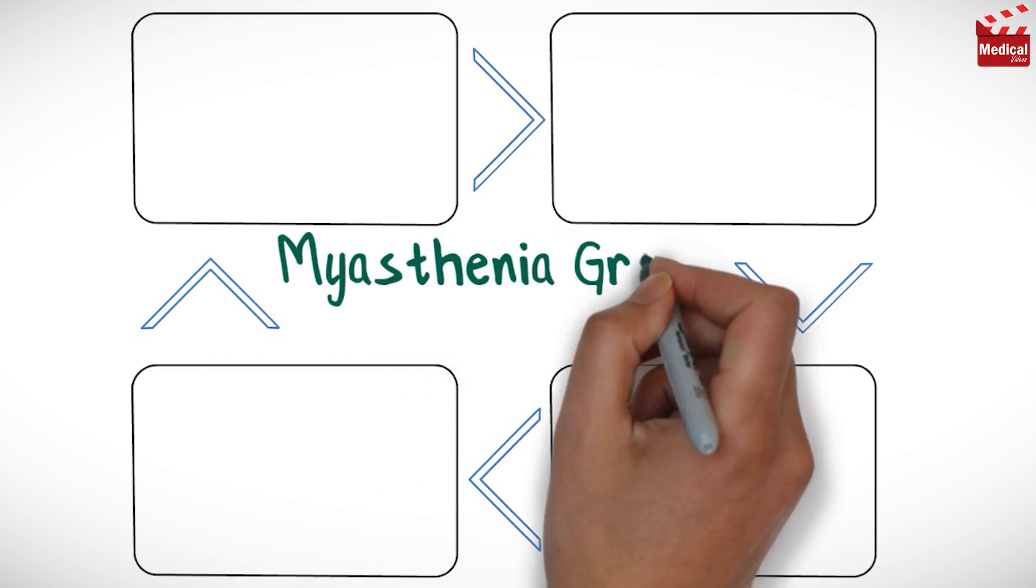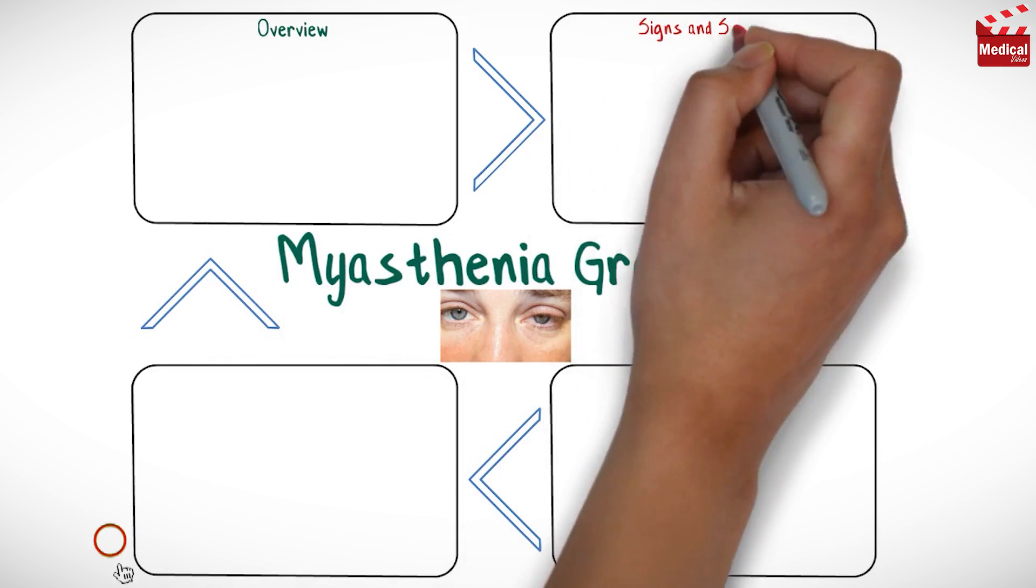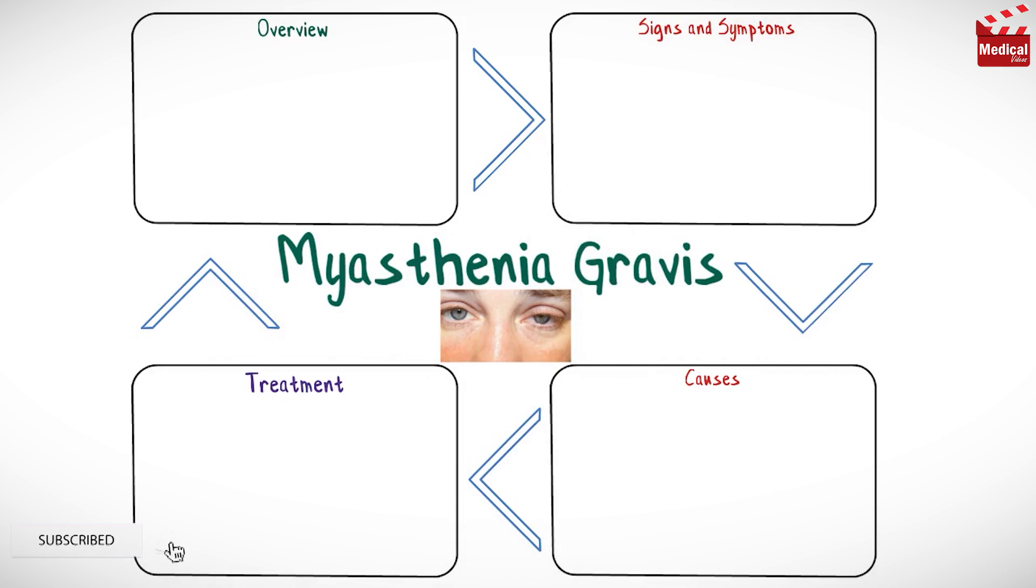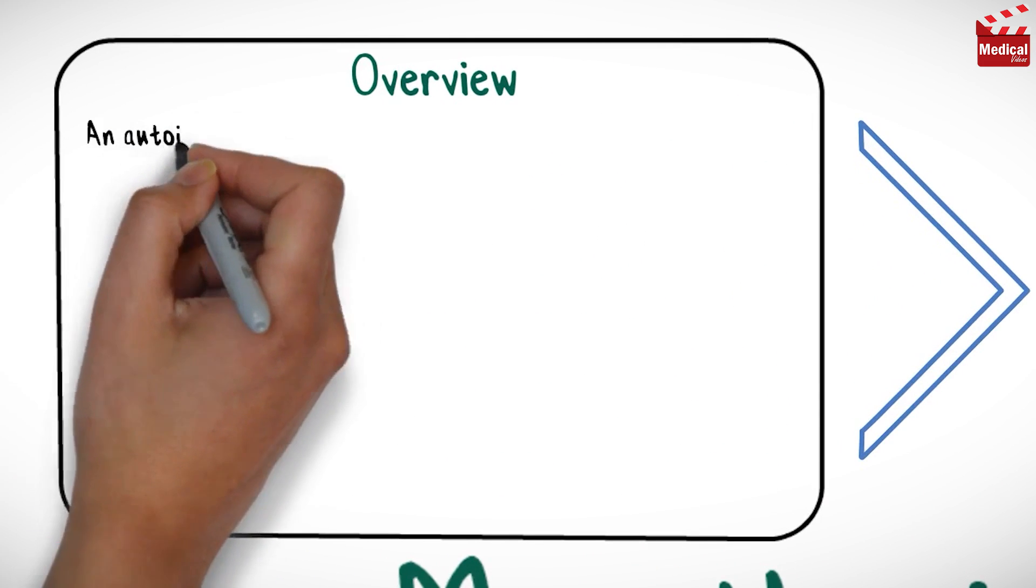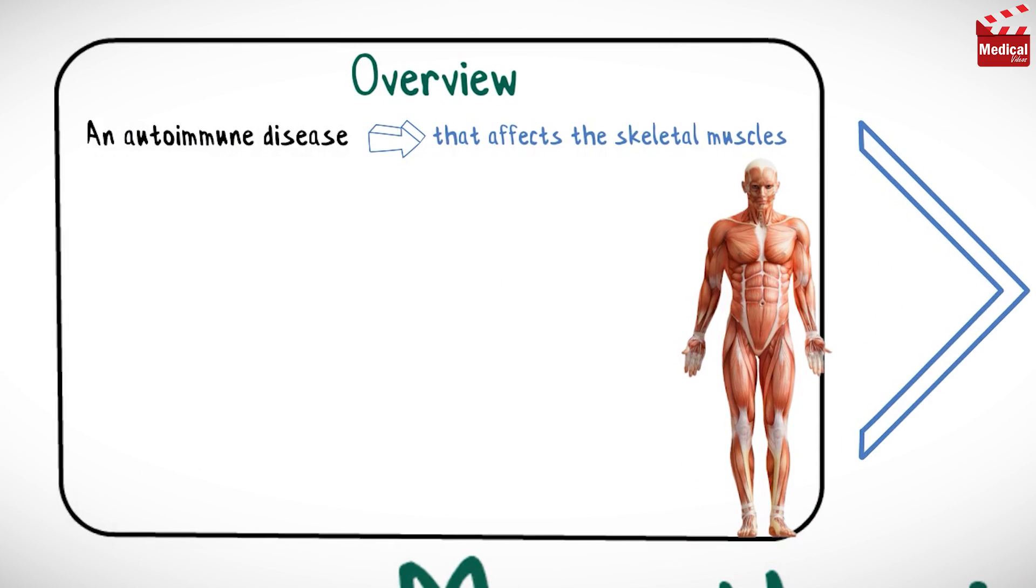In this video I'm going to talk about myasthenia gravis: some facts about this disease, signs and symptoms, causes, and treatment. Myasthenia gravis is an autoimmune disease that affects the skeletal muscles. It is characterized by weakness and rapid fatigue of any of the muscles under voluntary control.